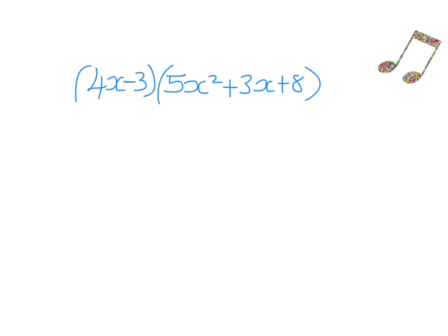We've got 4x minus 3, and we want to multiply it by 5x squared plus 3x plus 8. We start with the 4x and multiply everything by the 4x. So 4x times 5x squared: positive times positive, the answer is positive. Doing the numbers first: 4 times 5 is 20, and x times x squared gives x cubed, so 20x cubed.